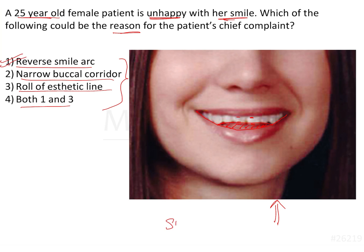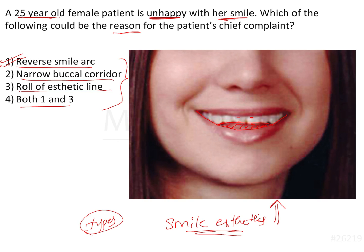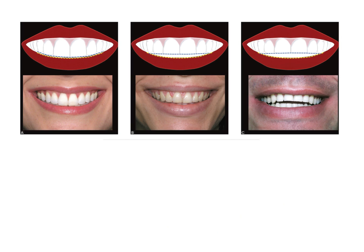Smile aesthetics is a very important topic from an exam perspective, including concepts like the gummy smile. The smile arc is basically the arc formed by joining the incisal edges of the maxillary teeth. The incisal edge of the central incisor is at one level, the lateral incisor is slightly higher, and so on posteriorly, forming a curve.